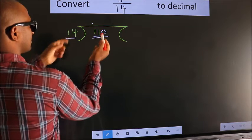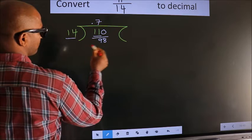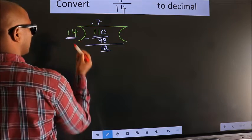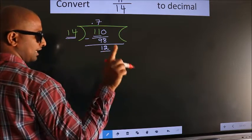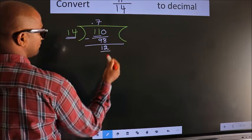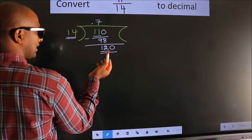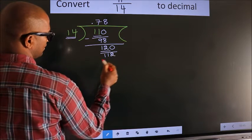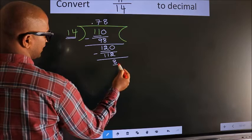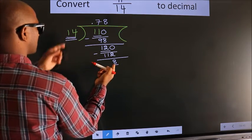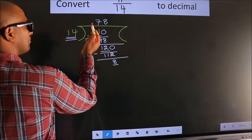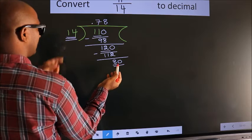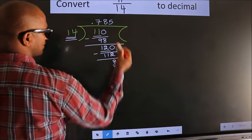A number close to 110 in the 14 table is 14 sevens = 98. We subtract and get 12. Now we have 12 here and 14 here. 12 is smaller than 14 and we already have the decimal, so we directly take zero, making 120. A number close to 120 in the 14 table is 14 eights = 112. We subtract and get 8. Now 8 is smaller than 14, so we take zero making 80. A number close to 80 in the 14 table is 14 fives = 70.